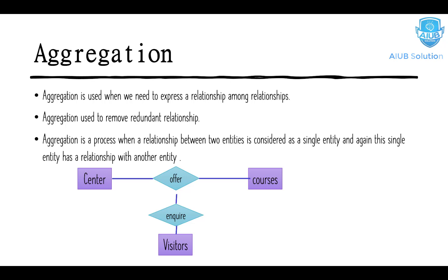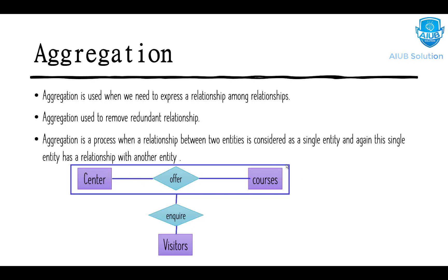Since we cannot directly form two overlapping relationships, we use aggregation. We take the 'center offers courses' relationship and wrap it as a single entity (represented by a rectangle box). This aggregated entity is no longer just a relationship — it becomes a single entity. Then we create a new relationship between this aggregated entity and the visitors entity. So visitors inquire through this aggregated 'centers–courses' entity. This is how aggregation works.